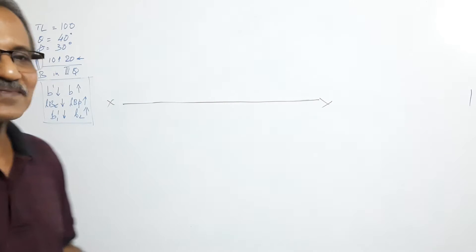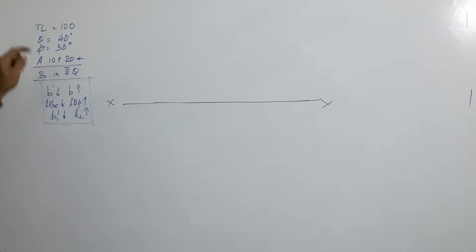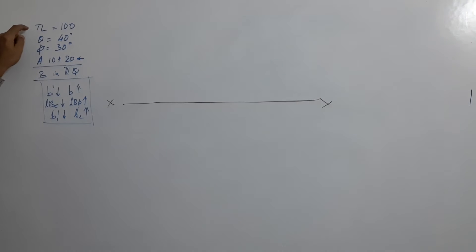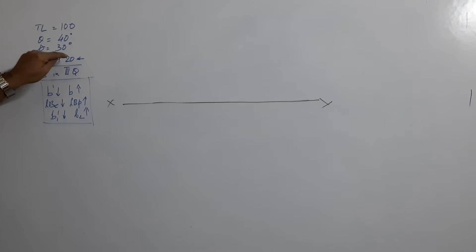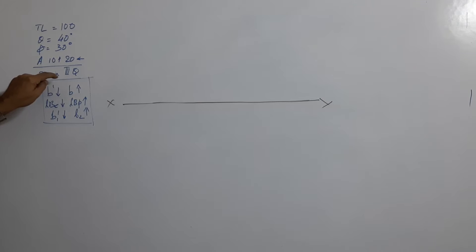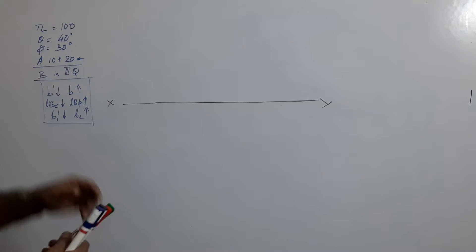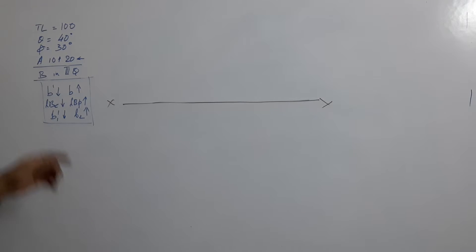Hello students. Another problem: true length 100, theta 40 degrees, point A is in the second quarter — 10 mm above and 20 mm behind. And B is in the third quarter.